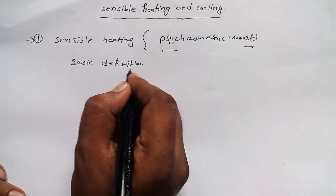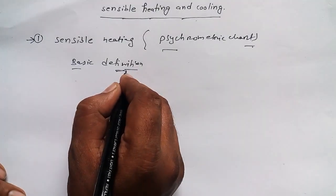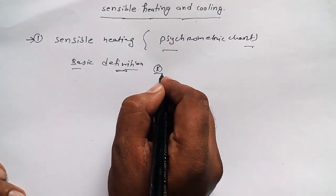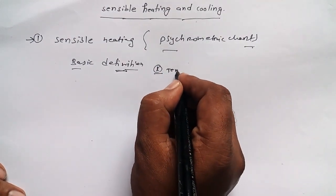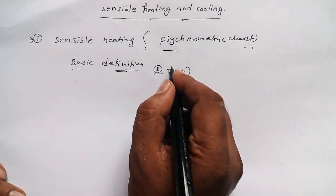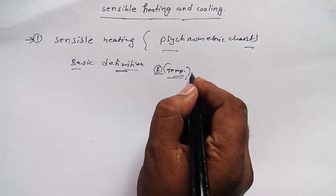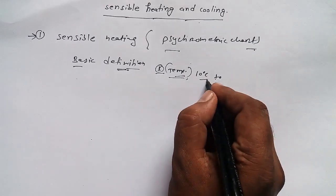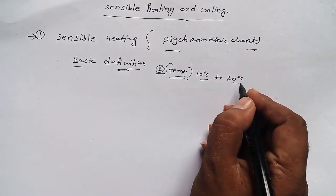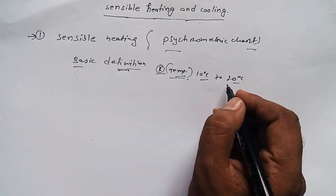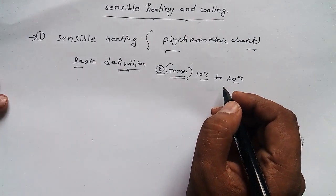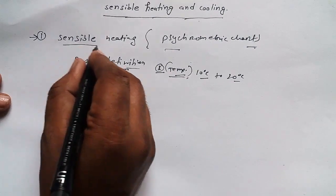What is sensible heating? Basically, what we can sense is known as sensible heating. If there is a change in temperature, that is known as sensible heating. If the temperature of a system is 10 degrees and we are increasing it to 20 degrees, we can sense the change in temperature in the system. That's why it's known as sensible heating.